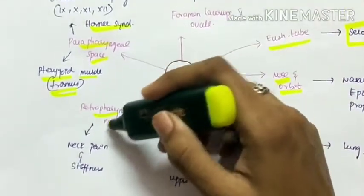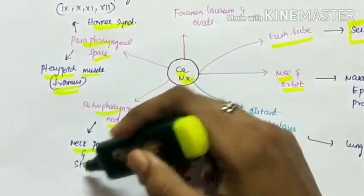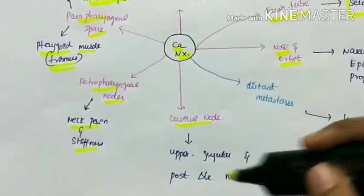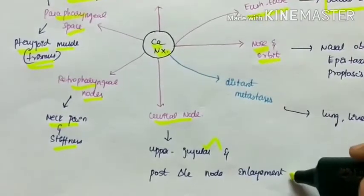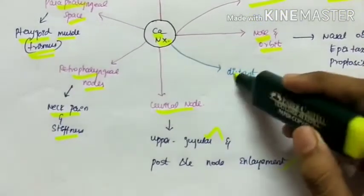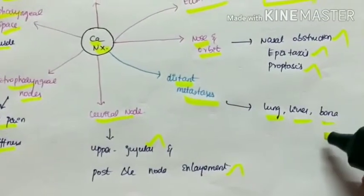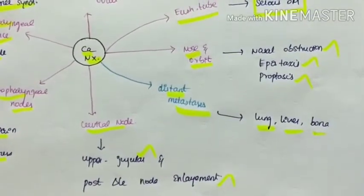It can also spread to the retropharyngeal lymph nodes producing neck pain and stiffness. The cervical lymph nodes involved are upper jugular and posterior triangle lymph nodes with enlargement. Distant metastasis occurs to the lung, liver, and bone. This is the overall spread of nasopharyngeal carcinoma.